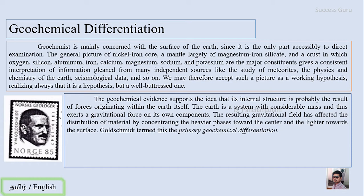Goldsmith termed this as primary geochemical differentiation. So this is the very first stage in the origin of earth. As you know, due to gravitational force, the heavier portion will be moving towards the center and the lighter one moves away from the center. By this way the minerals have been differentiated and such a differentiation is termed as the primary geochemical differentiation.